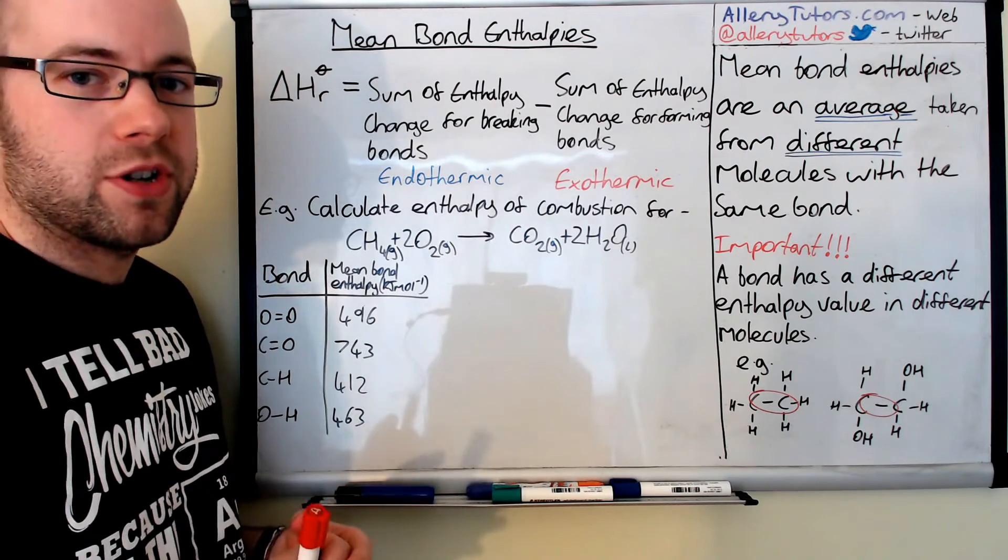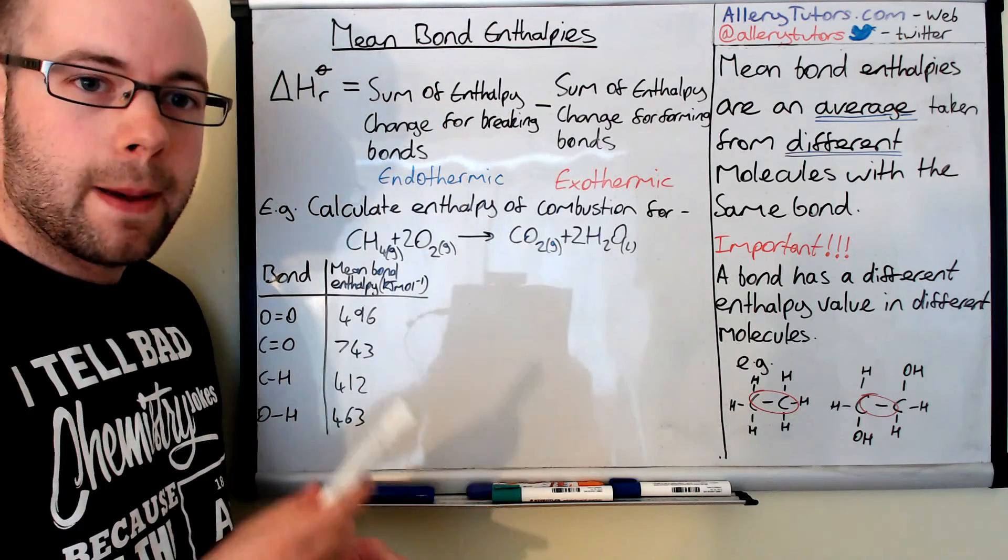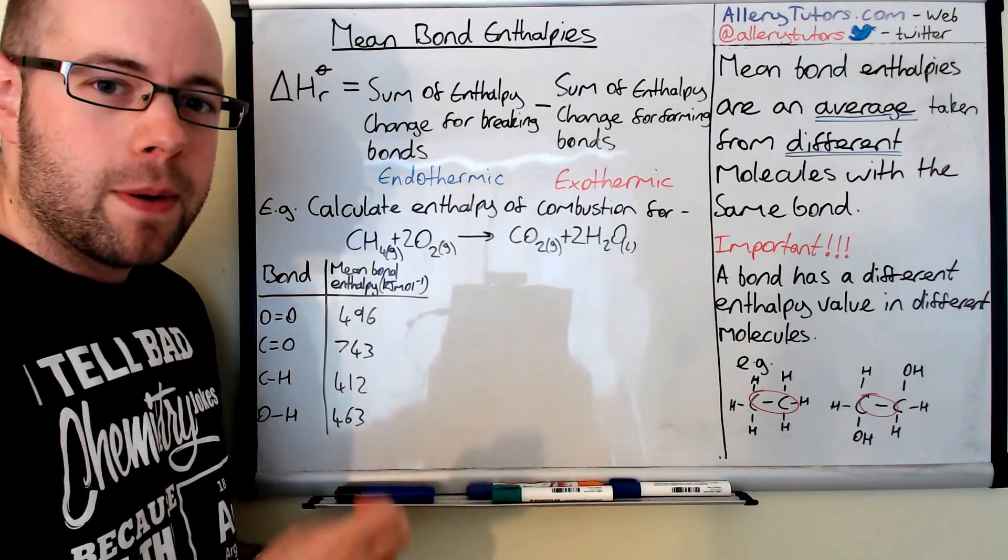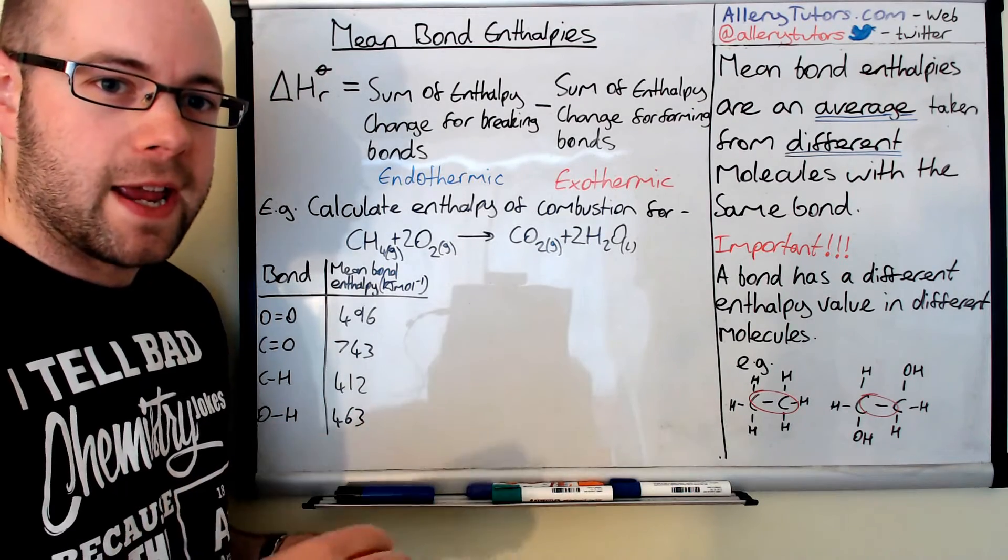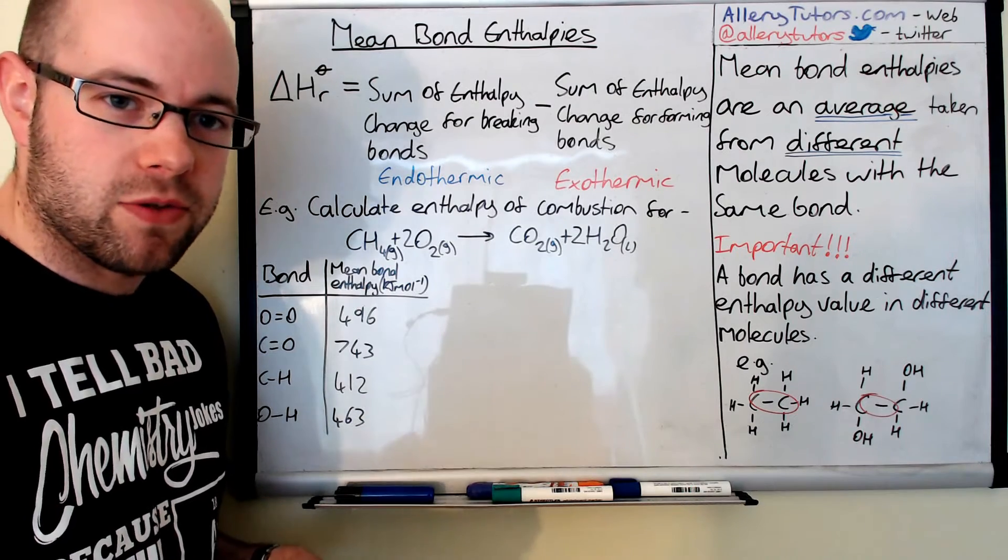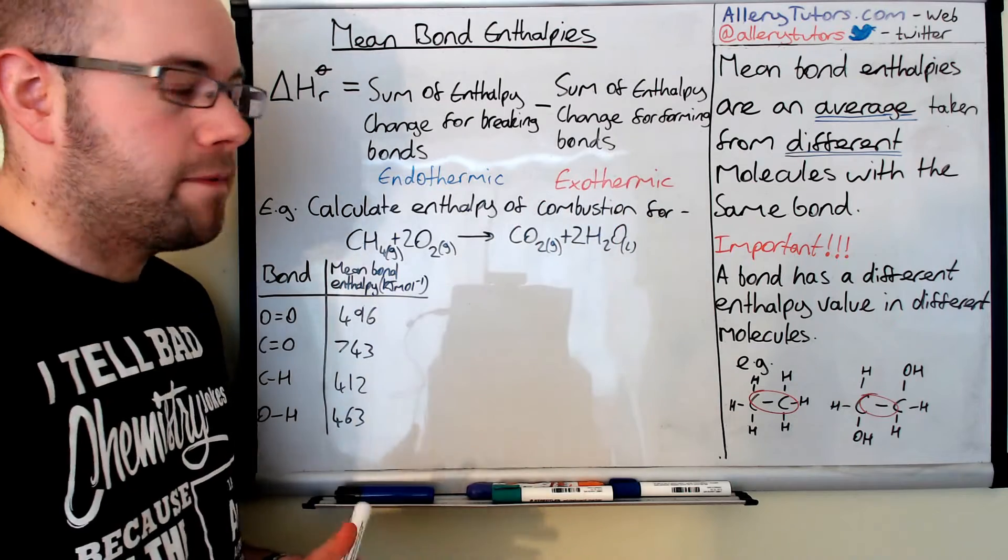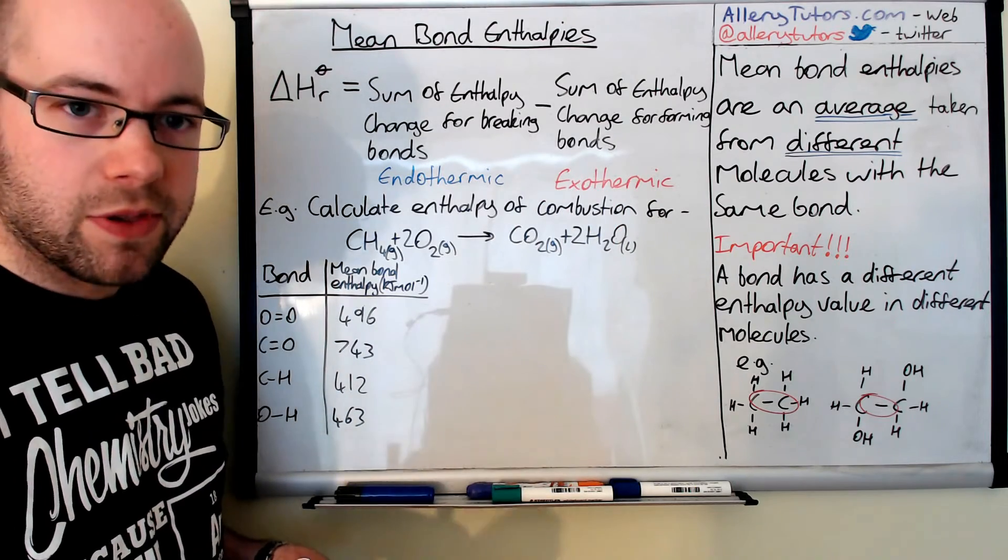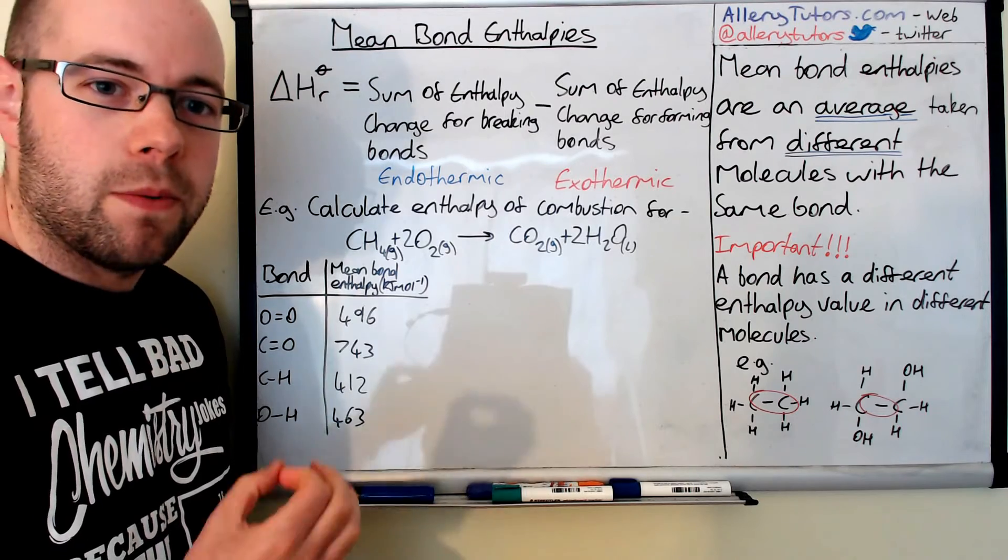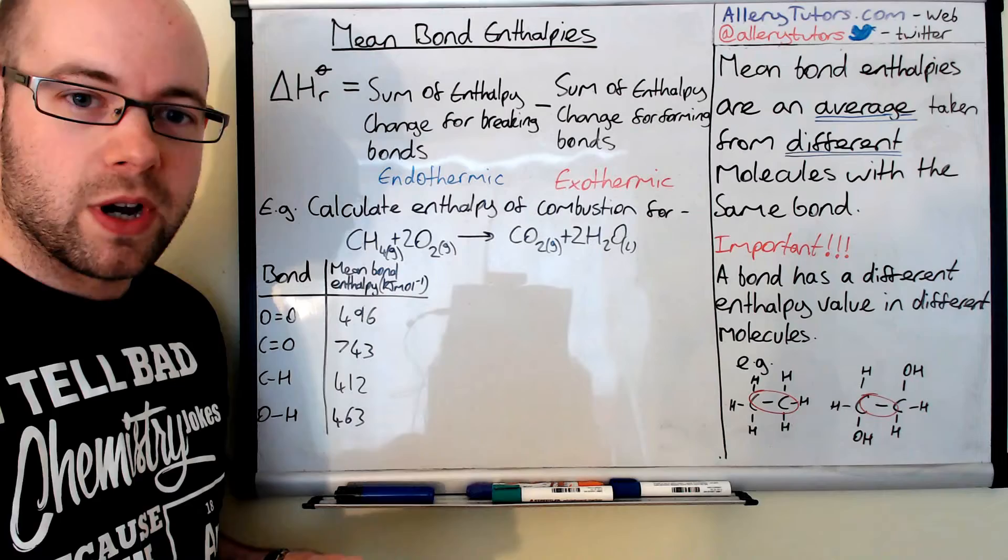The enthalpy of a reaction is basically the sum of enthalpy change for breaking bonds minus the sum of the enthalpy change of forming bonds. When we break bonds we need to put energy in, so we describe a bond breaking process as endothermic, and we describe a bond forming process as exothermic because energy is given out when we form bonds. We can work out the enthalpy of a reaction by using this equation.